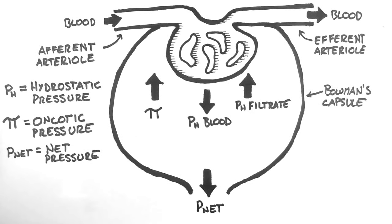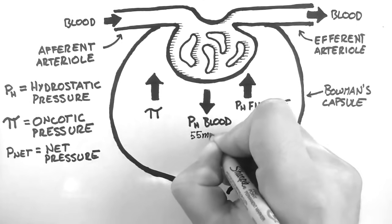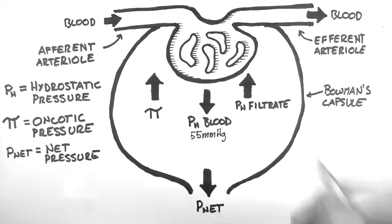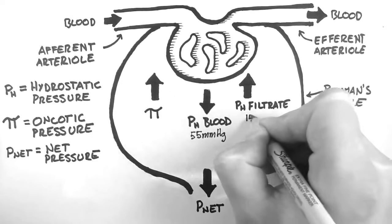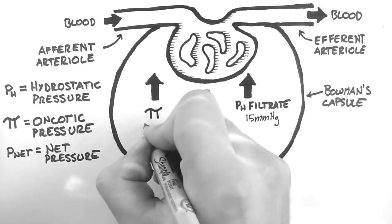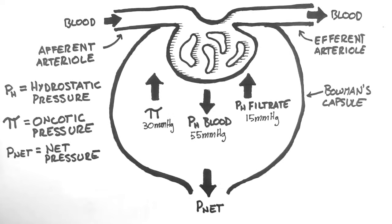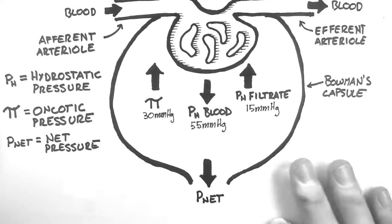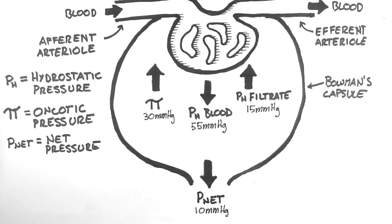Now for some specifics. In a normal healthy adult, the hydrostatic pressure of the blood in the capillaries is about 55 mmHg on average. The hydrostatic pressure of the filtrate is about 15 mmHg. And the oncotic pressure is about 30 mmHg. This gives us a net pressure driving fluid out of the glomerular capillaries of about 10 mmHg.